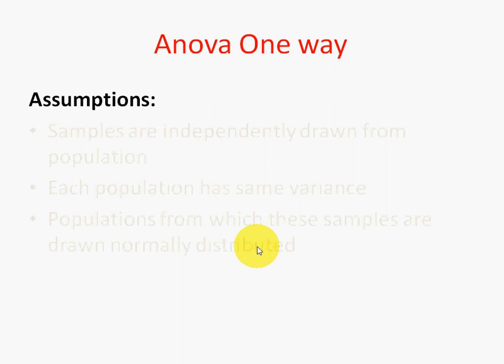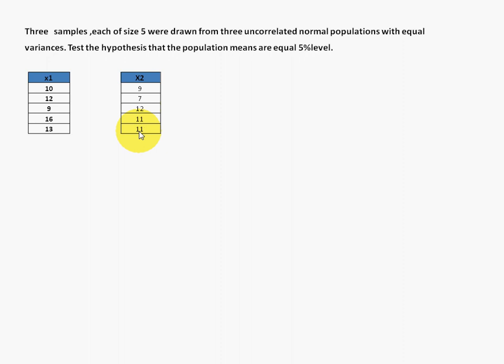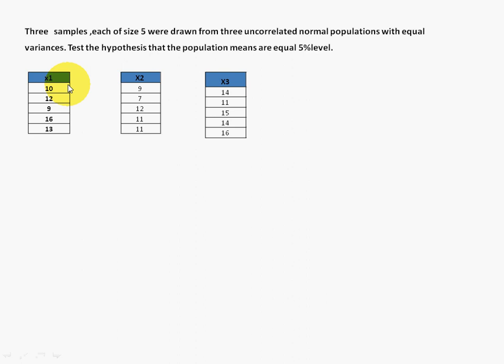The problem given has three samples — that means more than two — so we have to use ANOVA. Each sample has 5 observations (n=5). The first, second, and third samples are provided. What we have to finally conclude is: test the hypothesis that the populations have the same means or not. Each sample comes from a different population, and we check whether those populations have the same mean.